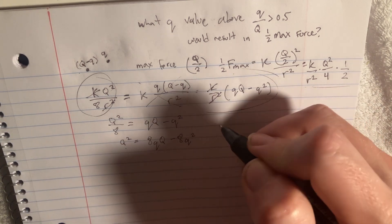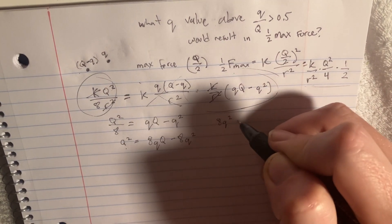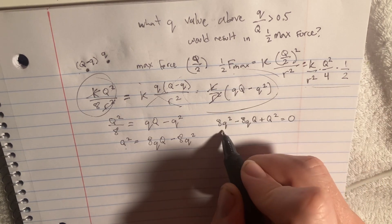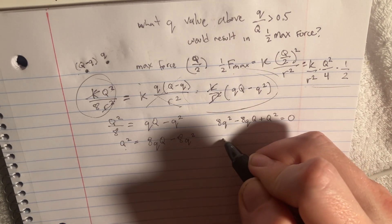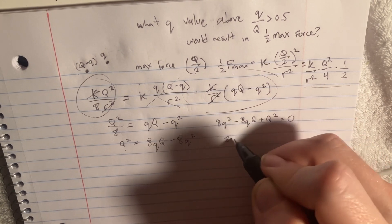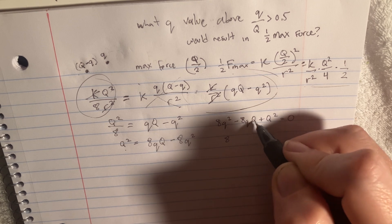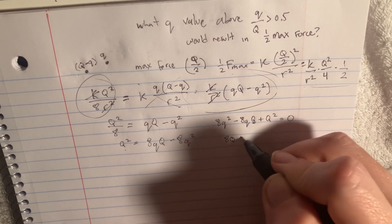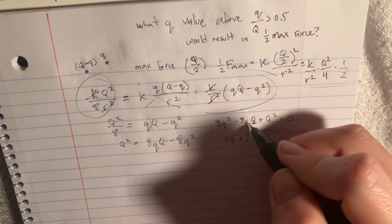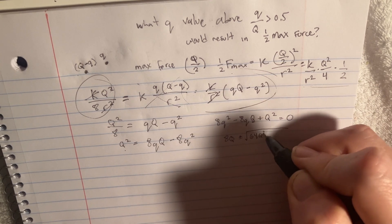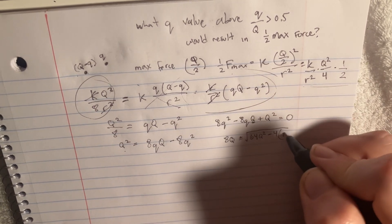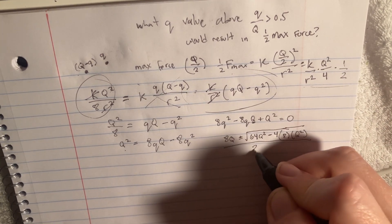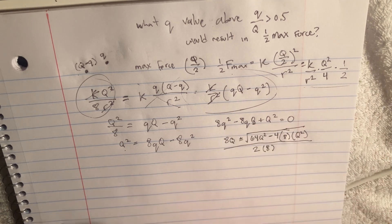Shifting terms to one side: 8q² minus 8Qq plus Q² equals 0. Applying the quadratic formula — keeping in mind that small q is the variable and big Q is a constant — we get q equals negative B, which is 8Q, plus or minus the square root of (64Q² minus 4 times 8 times Q²), all over 2 times 8, which is 16.